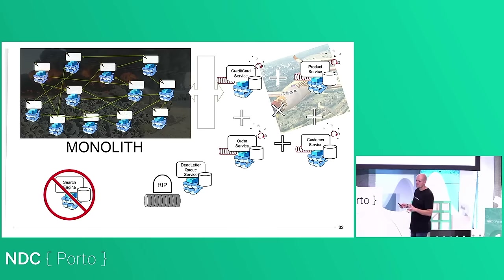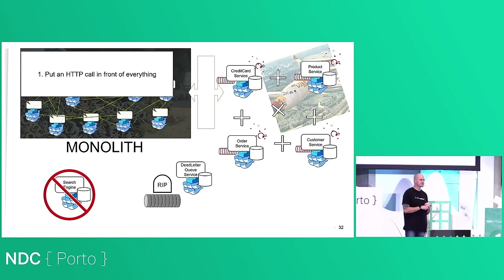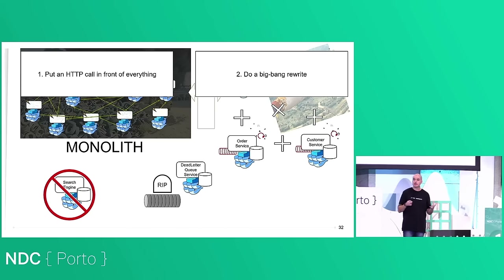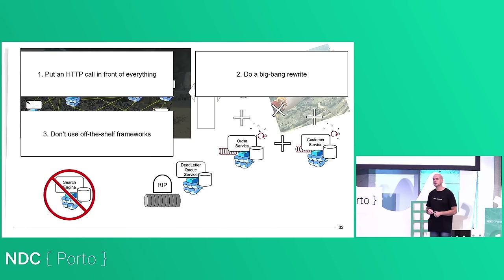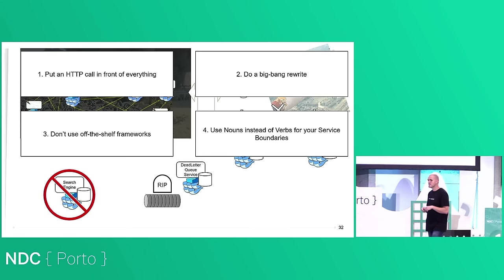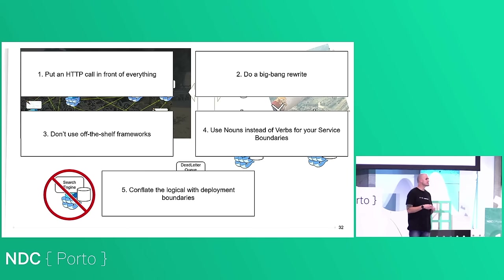So we've had five techniques. First: put an HTTP call in front of everything to achieve a nice distributed monolith. Second: do a big bang rewrite — because what's better than one system to maintain? Three systems is better. Third: do all the cool infrastructure things yourself, because that's the fun engineering work. Fourth: use nouns instead of verbs for service boundaries. And fifth: conflate your logical and physical deployment boundaries together so you can't work around any coupling issues.